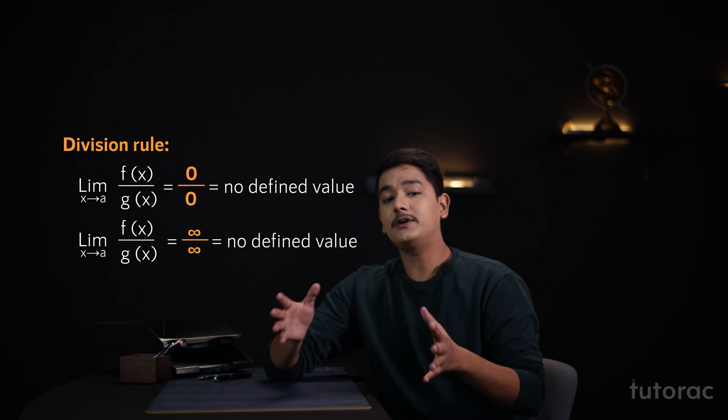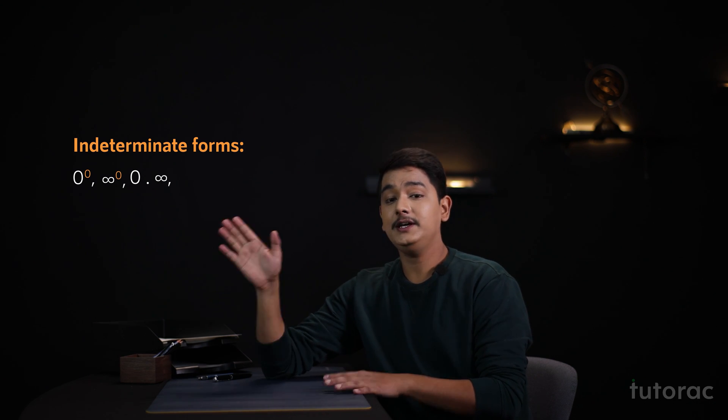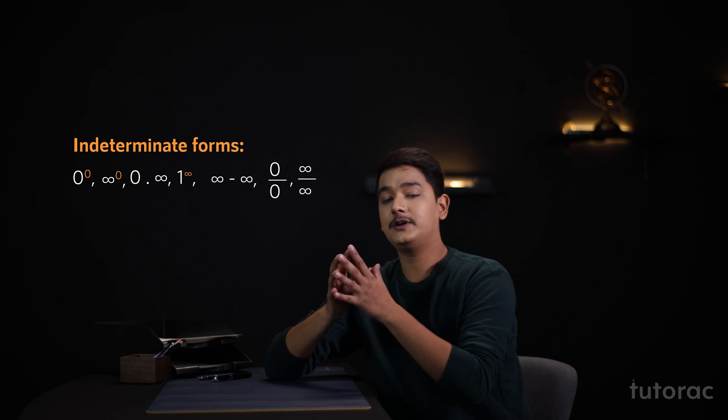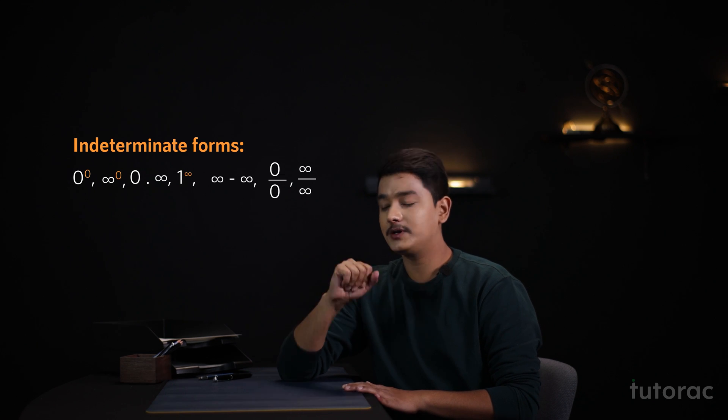I hope that you have understood till now and if we go on to try and to find other indeterminate forms, then we will get these forms that are 0 to the power 0, infinity to the power 0, 0 multiplied by infinity and 1 to the power infinity. I hope that you have understood the seven indeterminate forms till now. To understand them better, let us see a few examples.